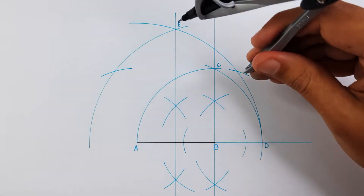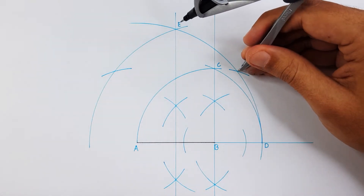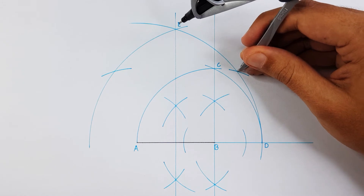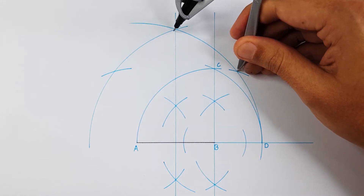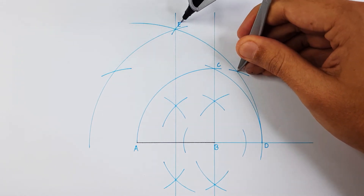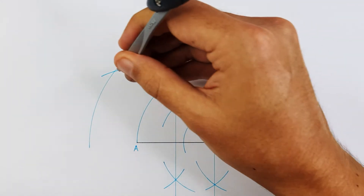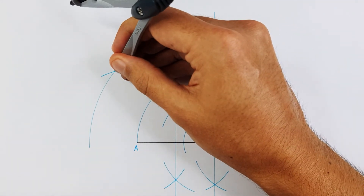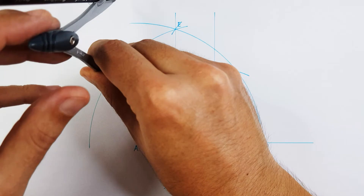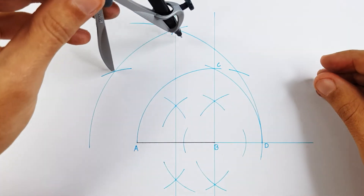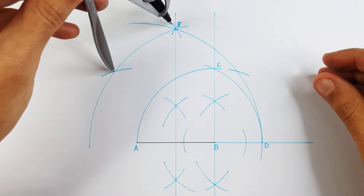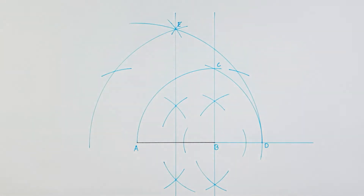Always remember to double check your constructions before you continue to draw your pentagon. If everything matches up, take your ruler and draw your pentagon.